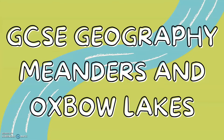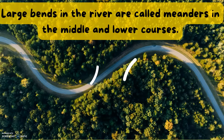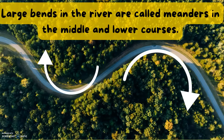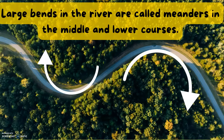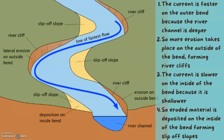GCSE Geography: Meanders and Oxbow Lakes. Meanders are large bends in the river and they occur in the middle and lower courses. You need to know how meanders form, so here are the four steps.